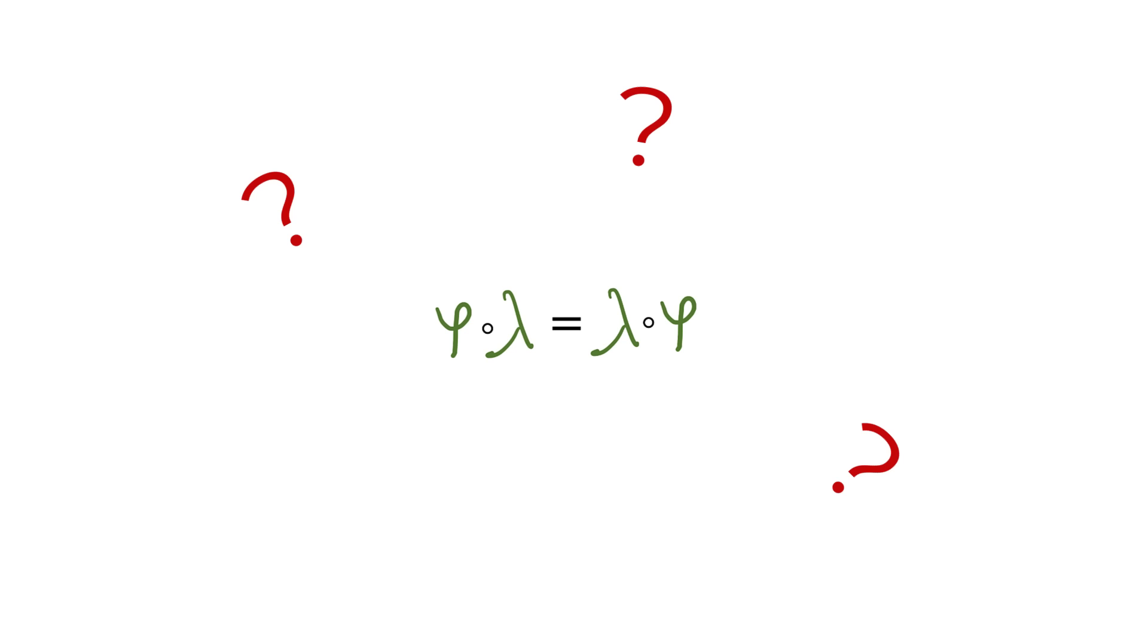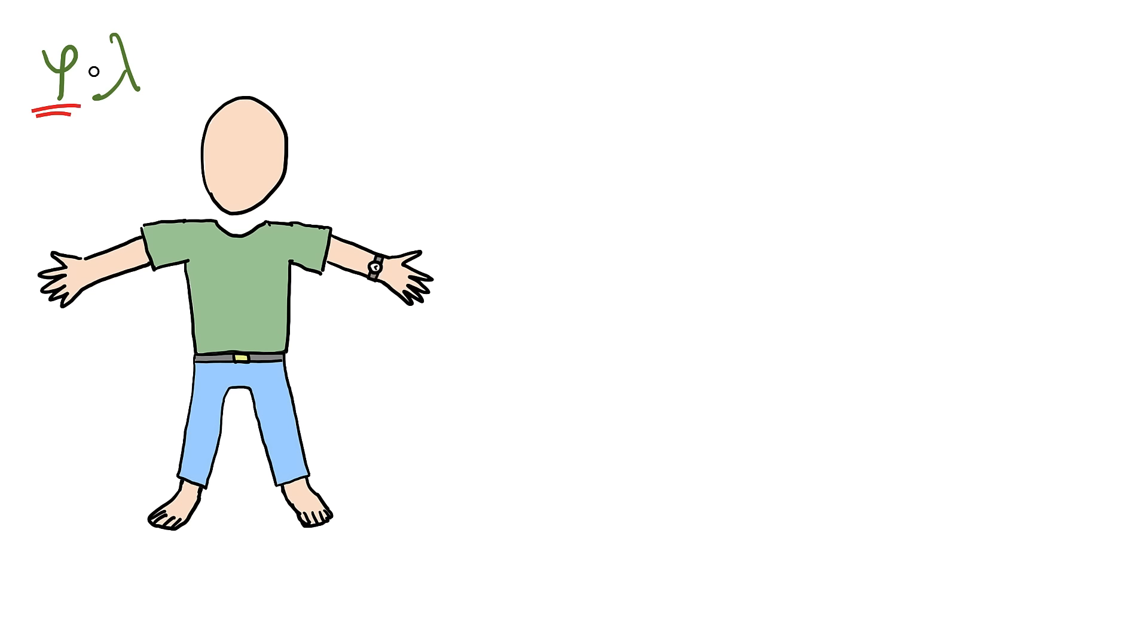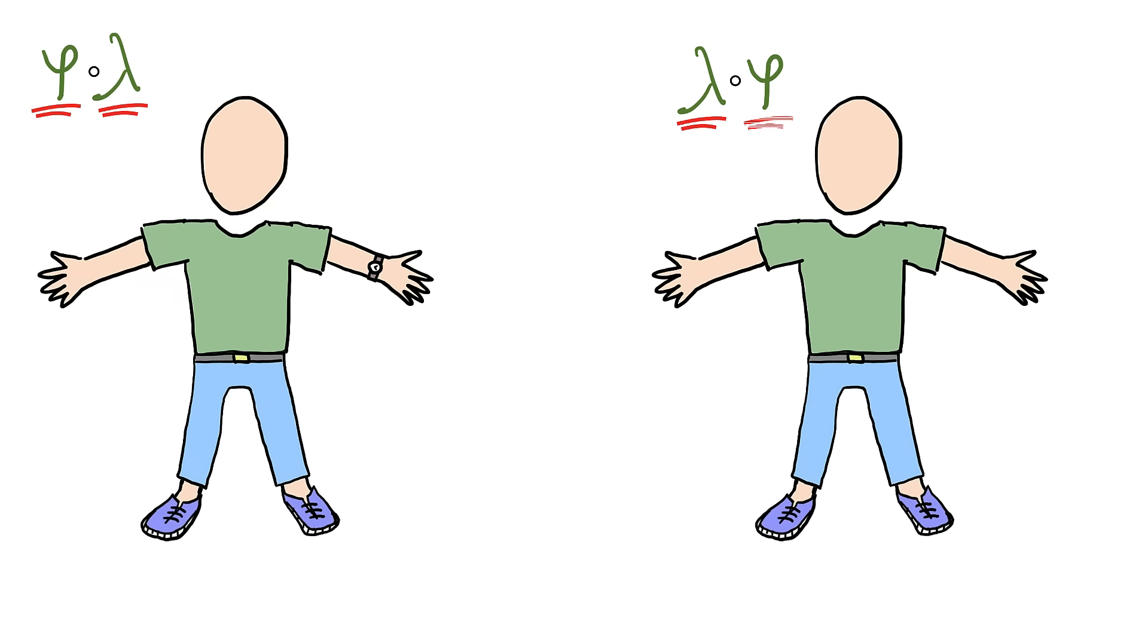Here's a little analogy that will help you understand this concept better. Imagine that we are transforming the look of a person. Let's say we have two transformations: phi, putting on a watch, and lambda, putting on shoes. If we apply phi and then lambda, this is what we get. Now, let's apply these two transformations in the opposite order. We apply lambda and then we apply phi and this is what we get, which is the exact same result. So in this case, we say that phi multiplied by lambda is the same as lambda multiplied by phi.